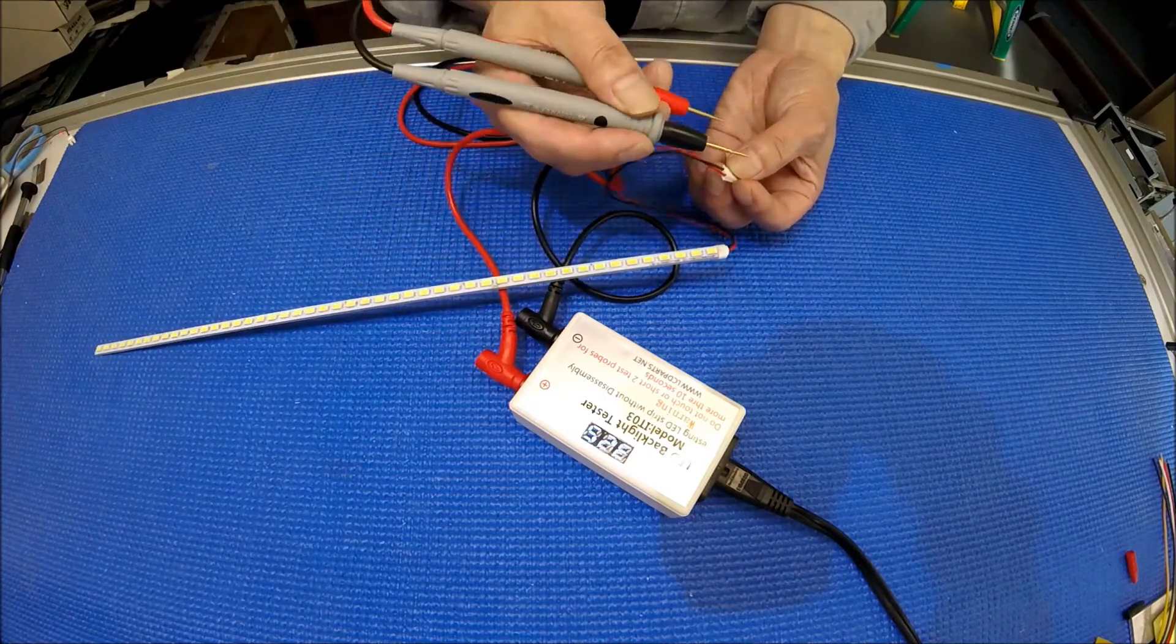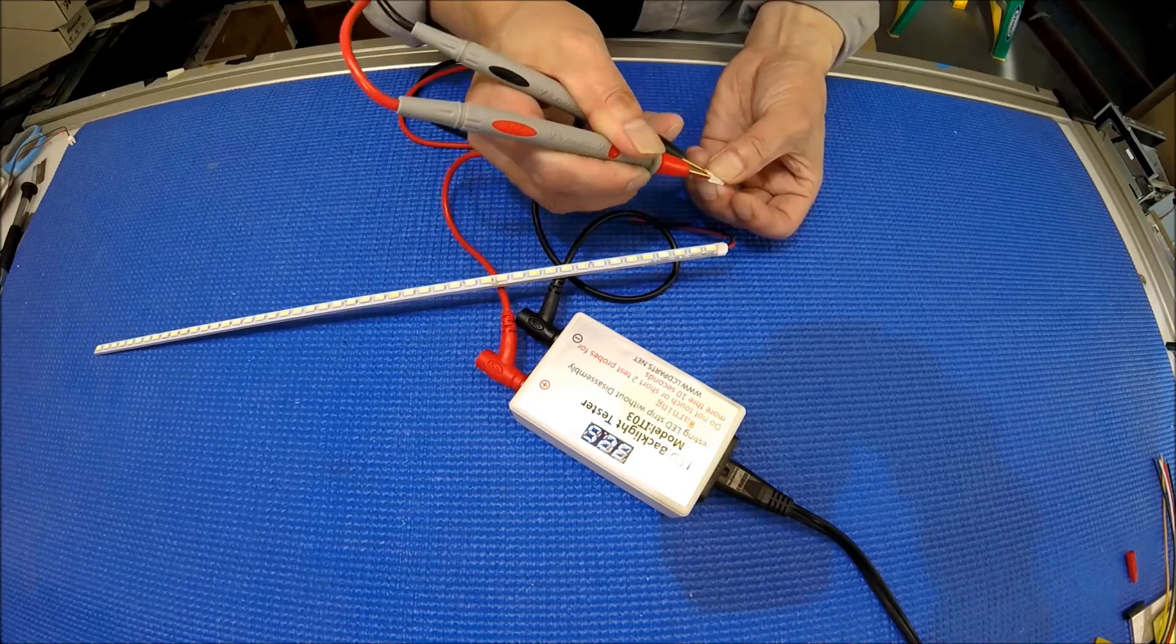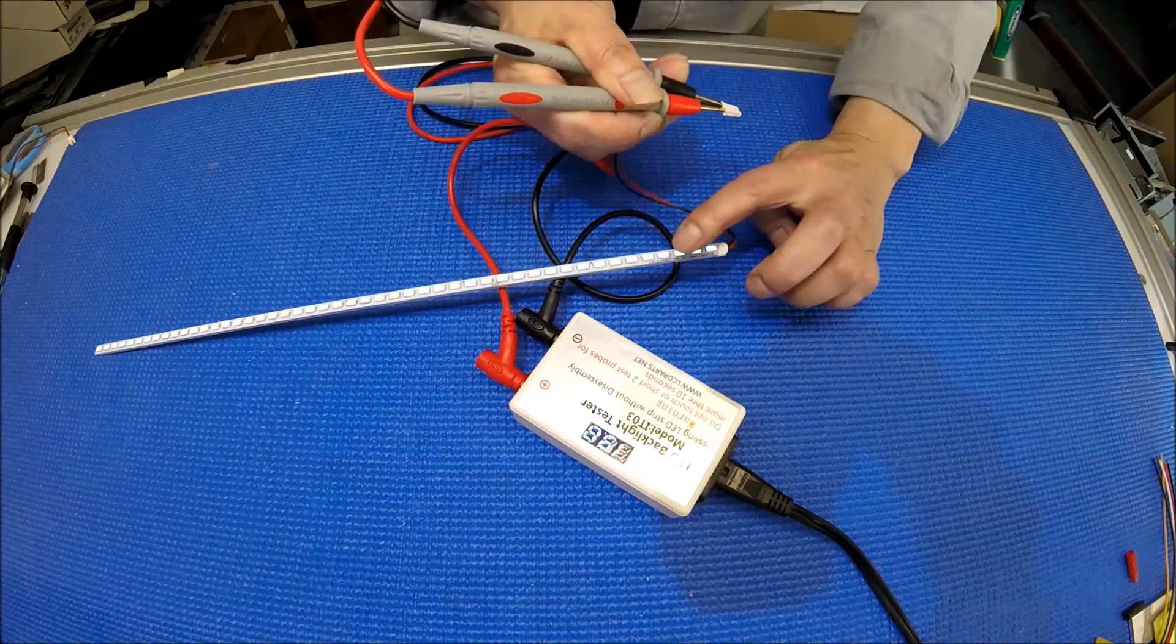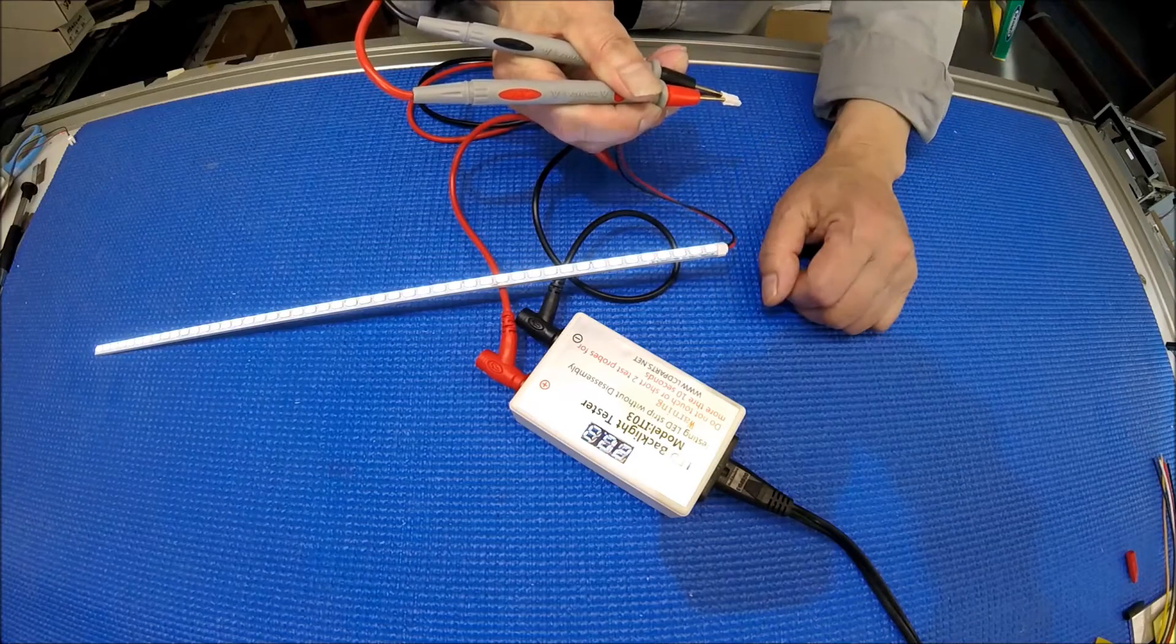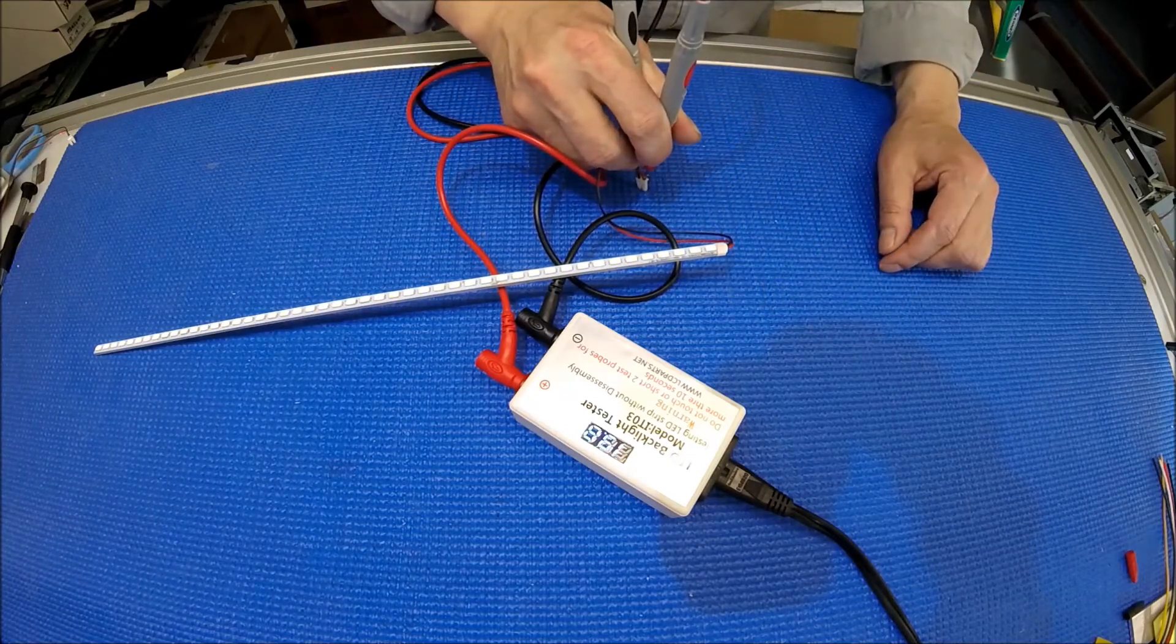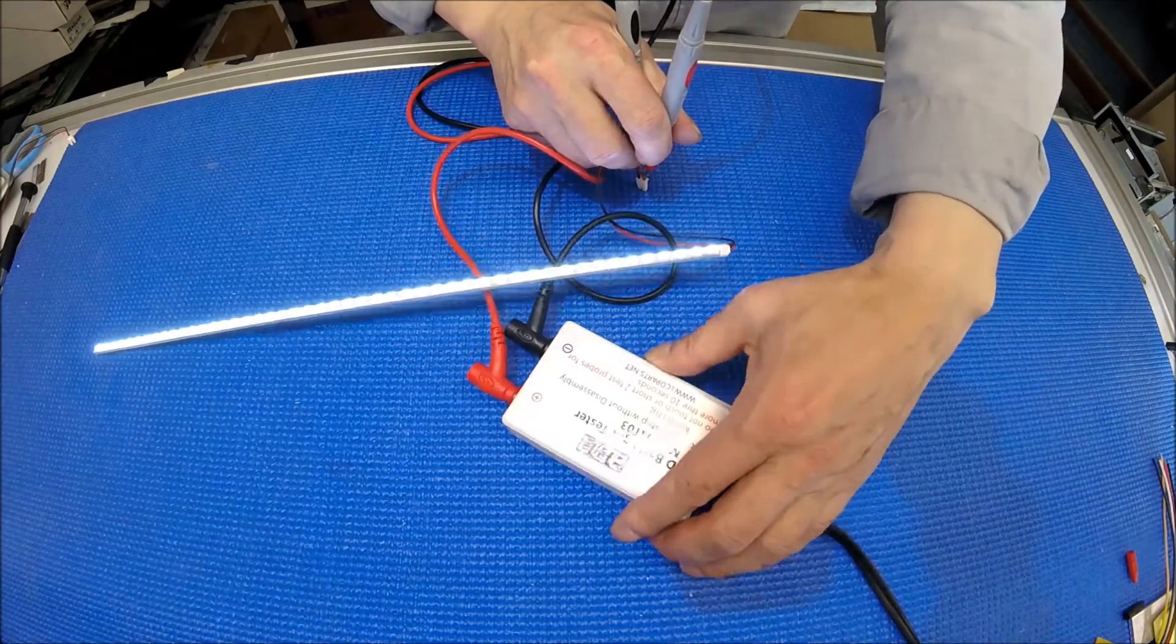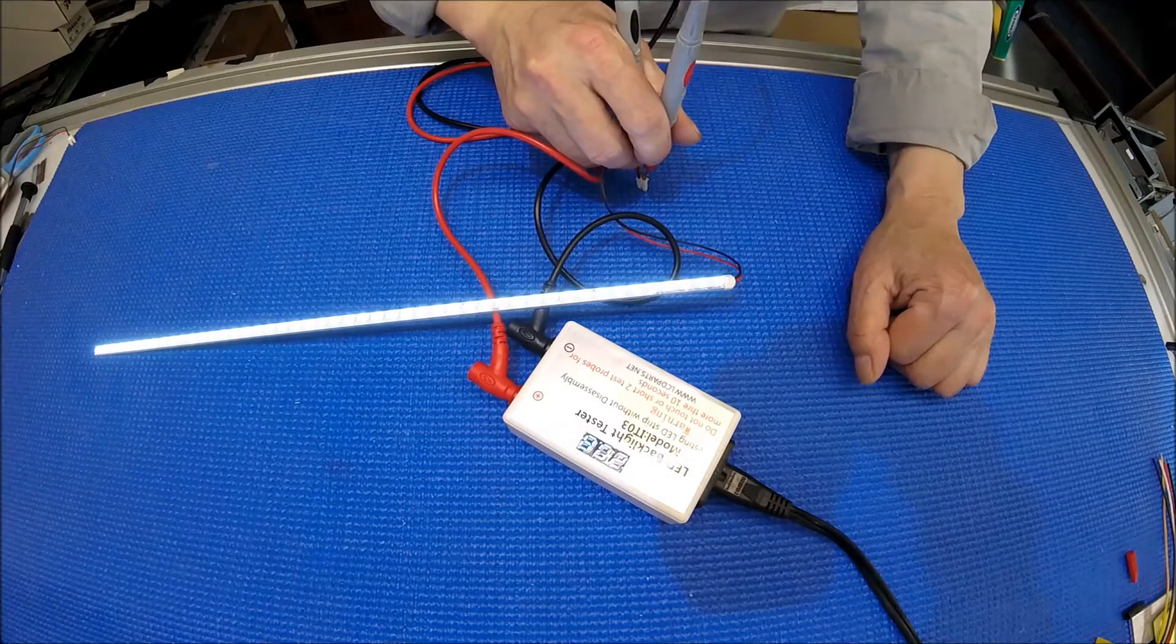You can see the LEDs gradually getting brighter and brighter, and then it will stop. After it stops, it tells you what the voltage is. So this one is 20.8 volts. This is how you test it, really simple. It doesn't matter how long the LED strip is.